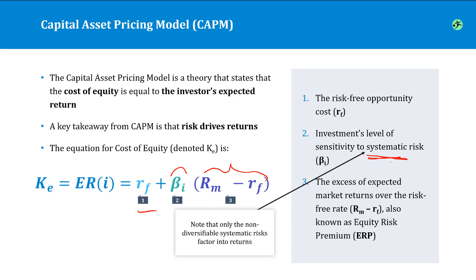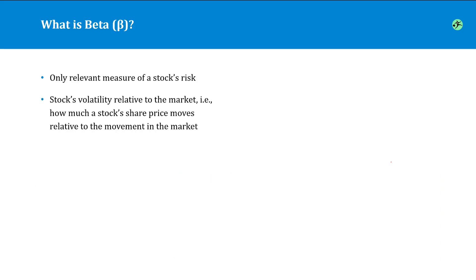Now beta in the CAPM equation is a measure of the stock's riskiness relative to the overall market. And it's honestly the only relevant measure of a stock's risk. Now a beta of 1.4 means that if the overall stock market increases by 1%, this stock would be expected to fluctuate by 1.4%, 1.4 times the market change.